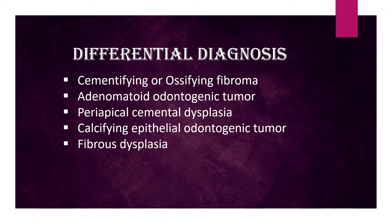Differential diagnosis: Cementifying or ossifying fibroma — odontoma is associated with unerupted molar teeth, is more radiopaque than fibroma, and is discovered at a much younger age. Adenomatoid odontogenic tumor — rarely as opaque as the complex type and found in association with maxillary canines. Periapical cemental dysplasia — smaller than the complex type and limited to the mandibular anterior region. Calcifying epithelial odontogenic tumor — rare, less opaque, and develops in the midline. Fibrous dysplasia — mottled or smoky pattern with poorly defined borders.